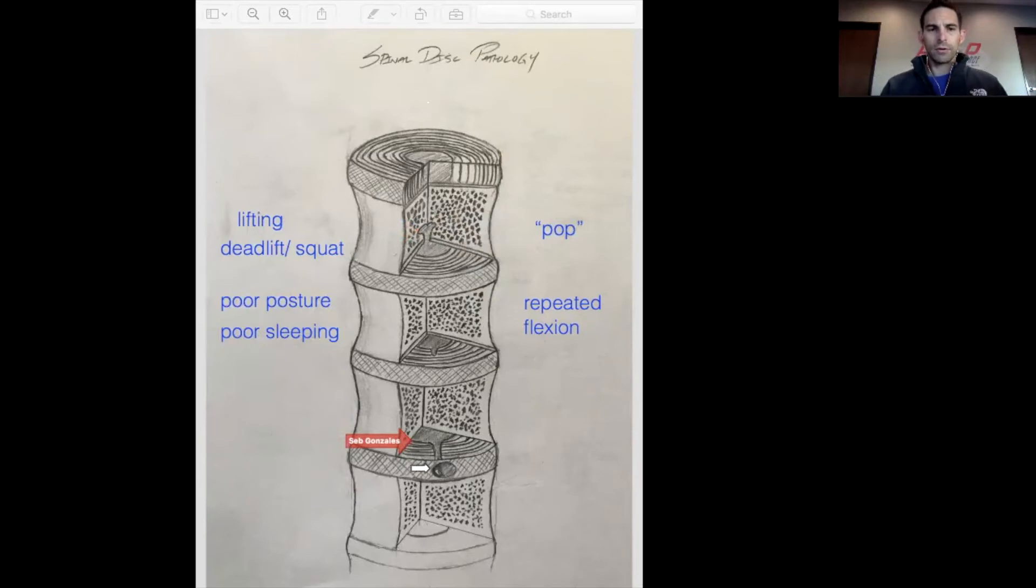This one is more like the herniation that people think about. See this little out pocketing right here, it actually has come through the actual area of those rings right into here. This is more advanced. I often tell people this does not happen overnight.